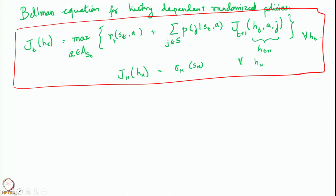What we will do now is use this particular equation and conclude that without loss of generality one can actually work with only Markov policies. The way to do that is by showing that this function J_t of h_t is in fact not even a function of h_t — it is a function only of the current state s_t. Although this equation asks us to write this for all possible histories, it suffices to do it only for the current state. From there we conclude that the optimal policy can also be chosen as just a function of the current state.